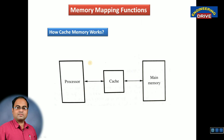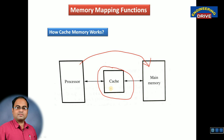Whenever a processor wants to execute some programs, it will directly search the data from main memory. The problem with directly searching data from main memory is that, compared to the speed of the processor, the speed of main memory is quite less — it is very slow actually. So how can we solve this problem? By keeping one separate part in our computer, that is cache memory. Cache memory is a very small amount of fast memory, used to increase the transfer rate between the processor and the main memory.